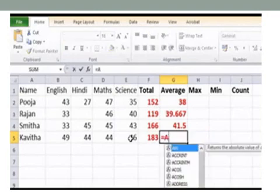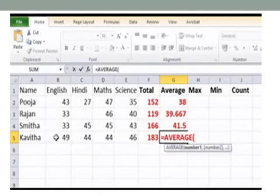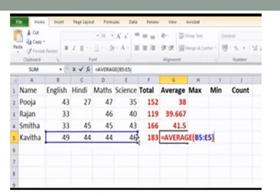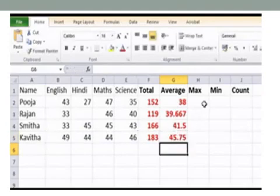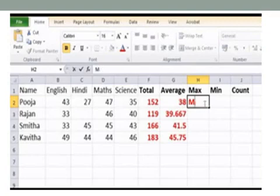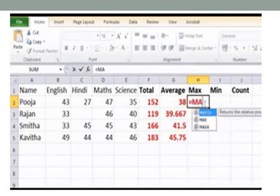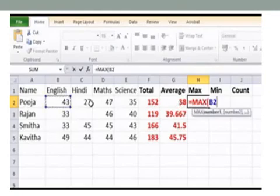Now to find the max, give equal to max, select the cells B2 to E2, press enter. When you type the formula, it can be seen in the formula bar. The answer for the calculation can be seen in the cell after you press the enter key.